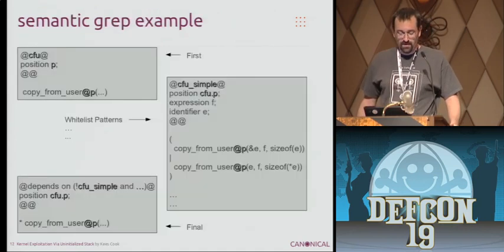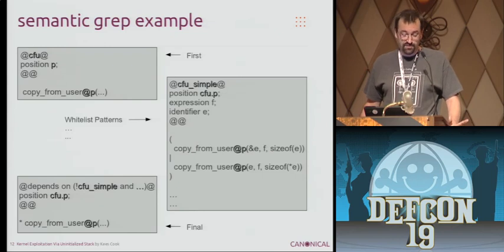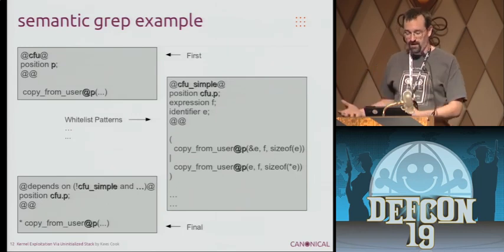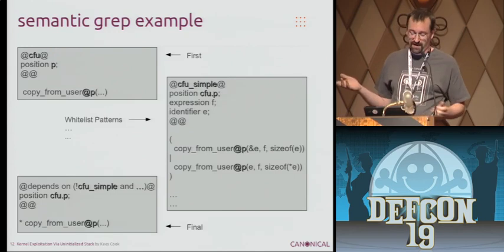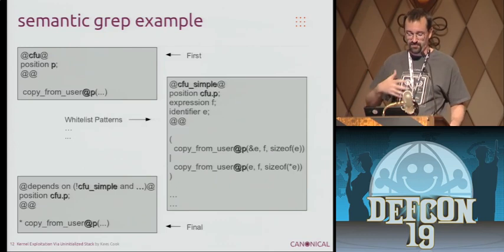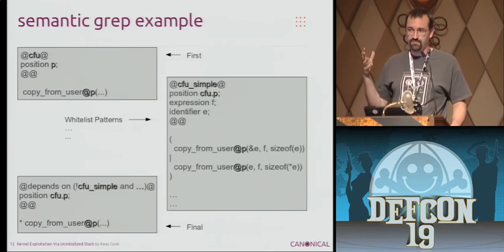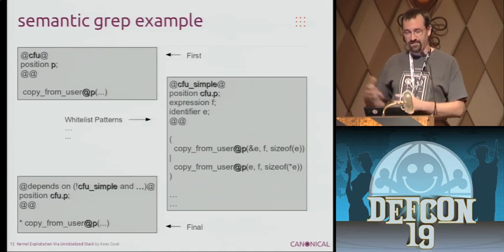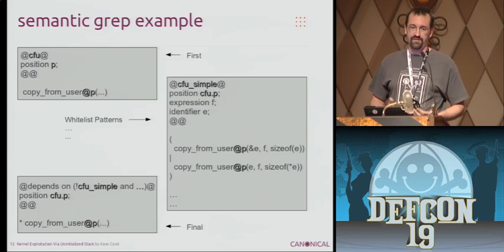Here's a quick example. First you define a position — the copy_from_user call is at position P. Then you have an extensive whitelist of things that are verifiably correct. An example whitelist pattern is copy_from_user into the address of a structure that we've actually done a sizeof on — so it's not overflowed, we know it's the right size. You create a large list of good patterns that make sense and don't need attention. Then the final chunk of the semantic grep is: if you have a copy_from_user that is not at the same position as any of the whitelists, then you have something that actually needs analysis.